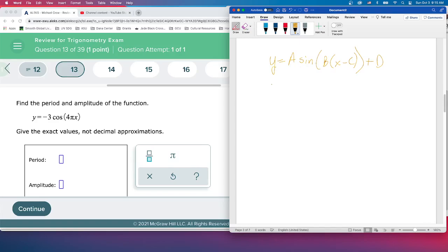The value, the number in front, a, actually the absolute value of a because it could be negative which inverts it, flips it over the x-axis if you have a negative. But the absolute value of a is our amplitude. Remember that's the how high and low it goes.